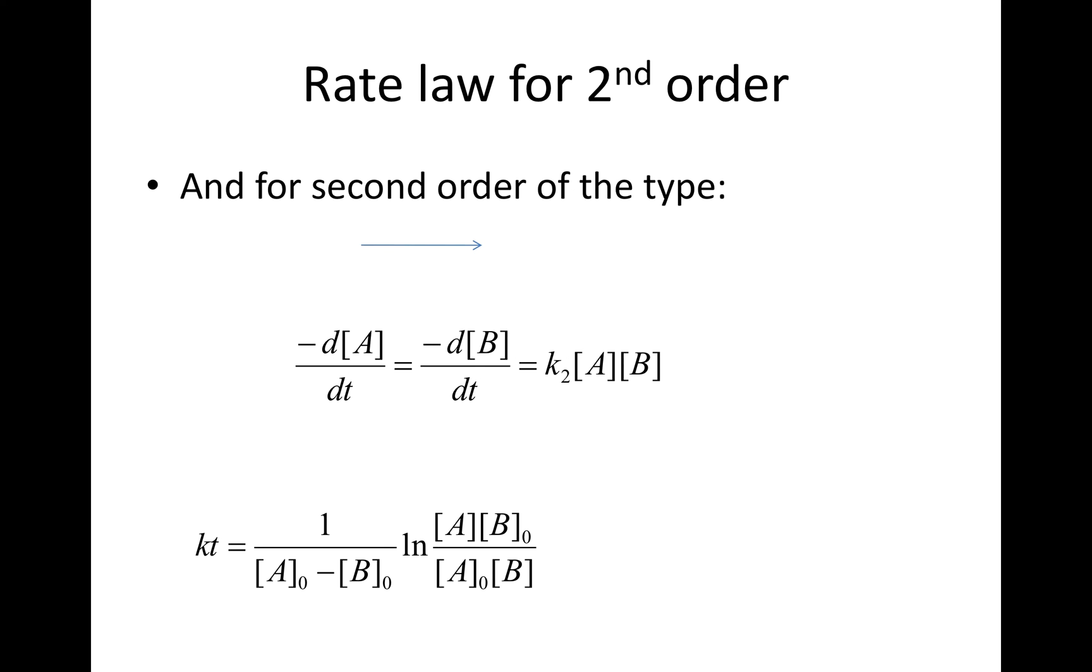And for the second order of the type, let's use the simplest, or probably let's use the most difficult in this case, A plus B giving you products. Now with this, the rate law is given by -dA/dt = -dB/dt = k₂AB.